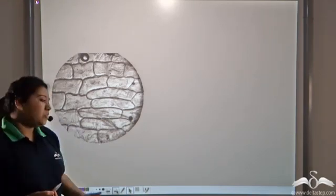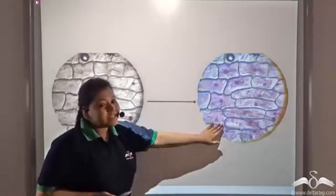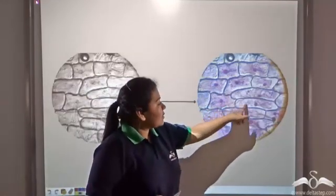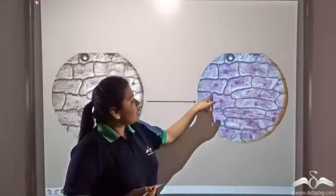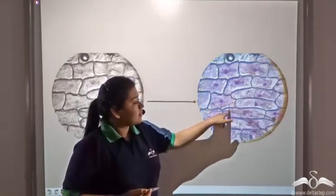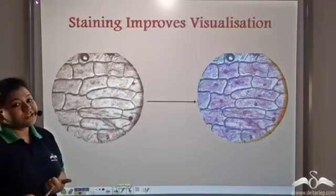Well, you can stain it with appropriate stains. It appears bright and colorful like this. All the internal structures are now more distinct and even the cellular boundary is comprehensible. So, staining improves visualization.